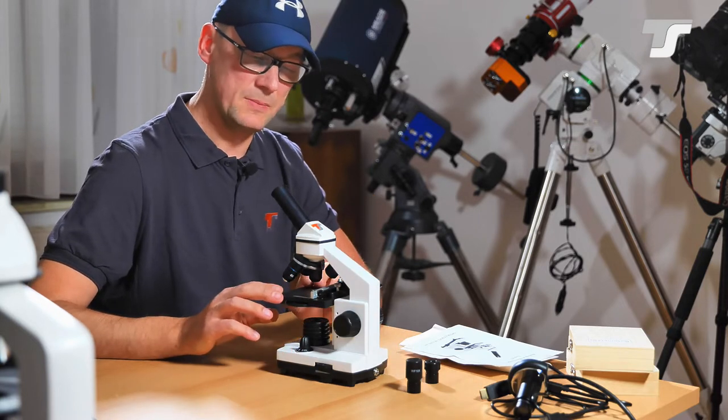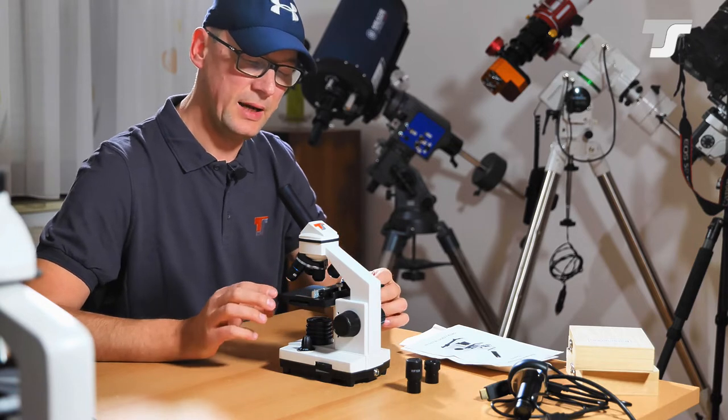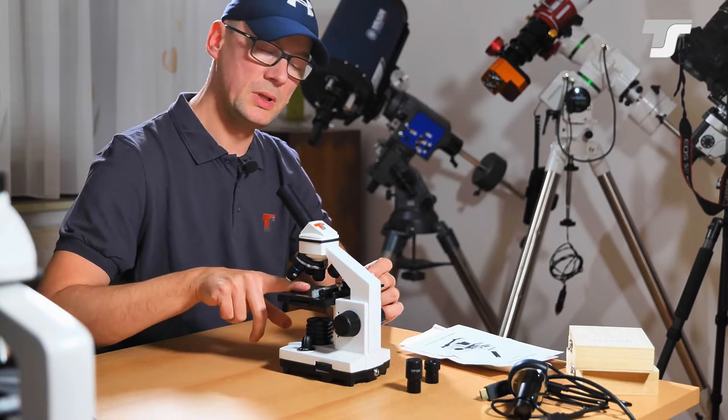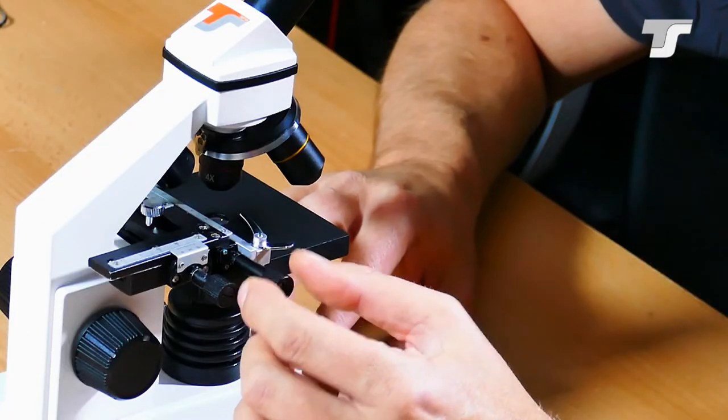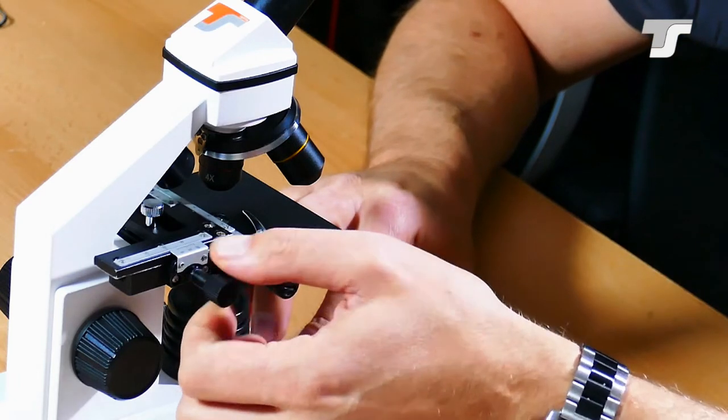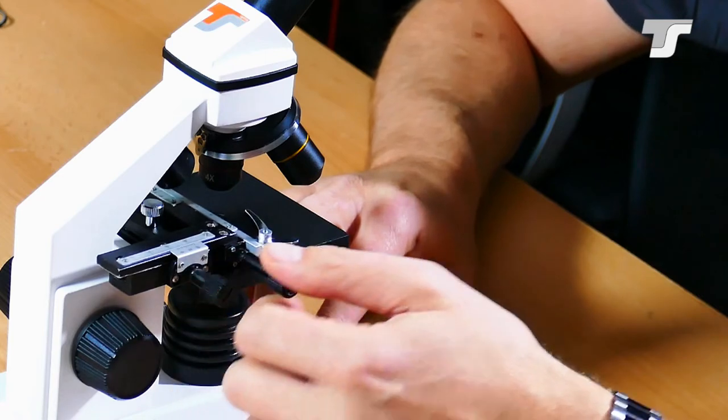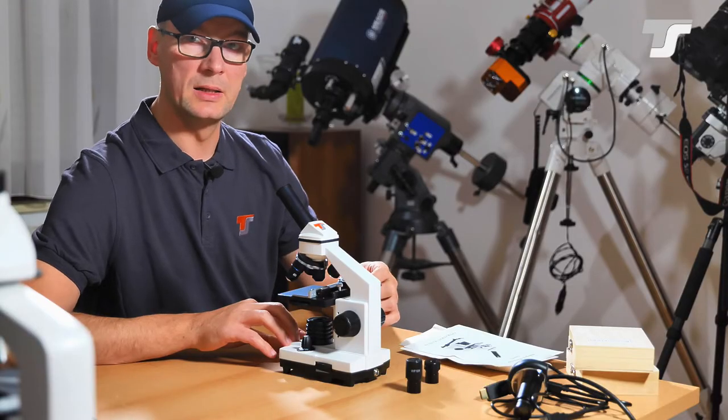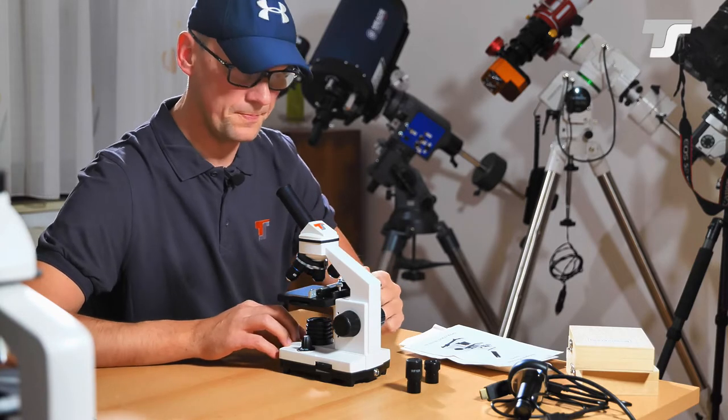The next thing, of course, the most prominent thing here is this cross table. When you put your sample on this table, you can move it exactly around by using these rotating knobs here. This will just move your sample around to get it in the perfect position to your field of view.